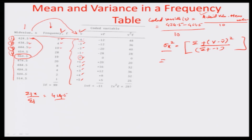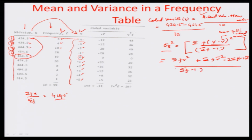The standard deviation can be represented as the square root of sigma f times (v minus v-dash) squared, divided by sigma f minus 1, where v-dash is the mean of the coded variable. Simplifying, this results in sigma f v squared plus sigma f v-dash squared minus twice sigma f v times v-dash, divided by sigma f minus 1. With n equal to 99 total observations, this becomes sigma f v squared by n minus 1.